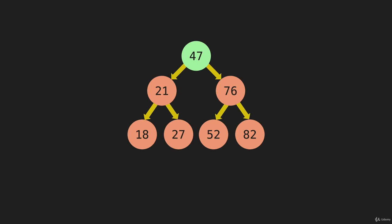And now we come back up to the 47. It has gone left and right, and it can write its value to the array. So when you compare post-order, which is what this is, to pre-order, the one that we did previously: in pre-order, we wrote the 47 to the array first. In post-order, we write the 47 to the array last.